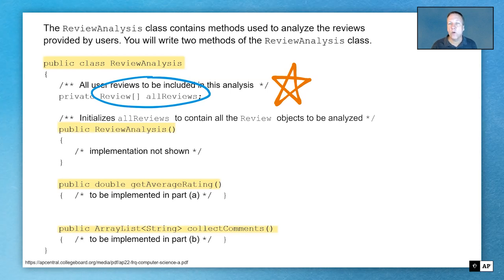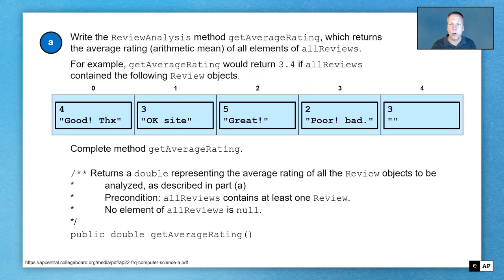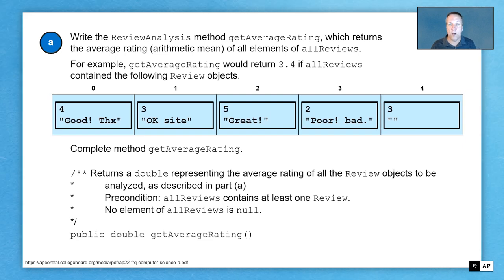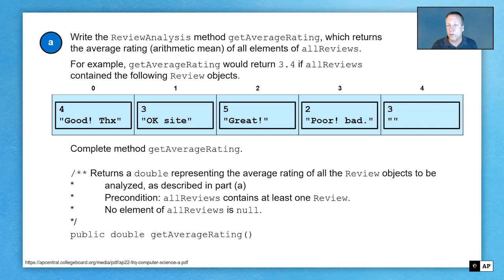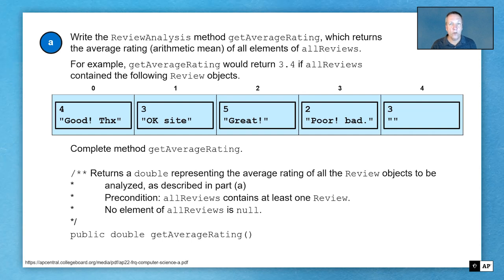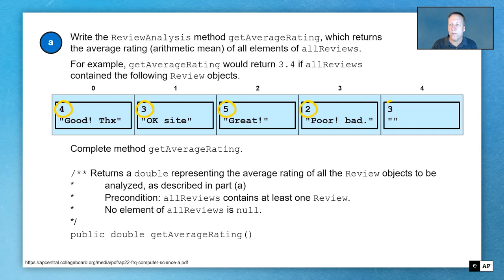Let's go ahead and focus on part A first: the getAverageRating. Part A says we're going to write the ReviewAnalysis method, getAverageRating, which returns the average rating — also called the arithmetic mean — of all the elements of the reviews. For example, we have four different reviews, and you'll notice they each contain a review rating and a string. These ratings — the number four, the three, the five, the two, and the three — we want to get the average rating.